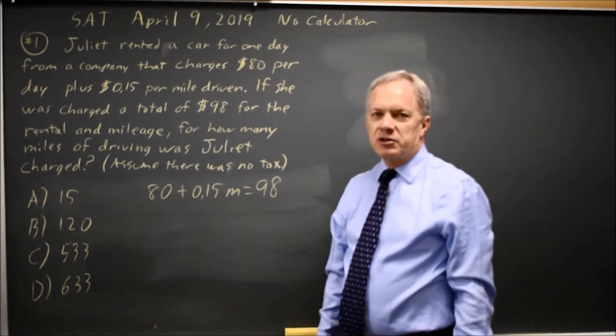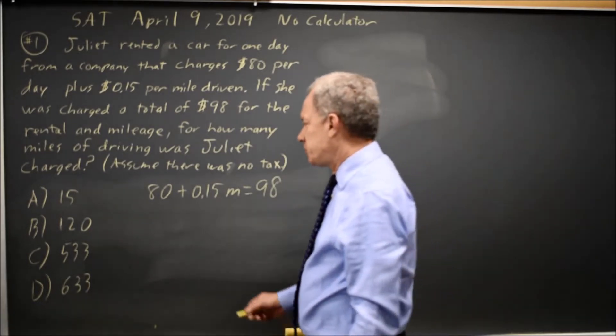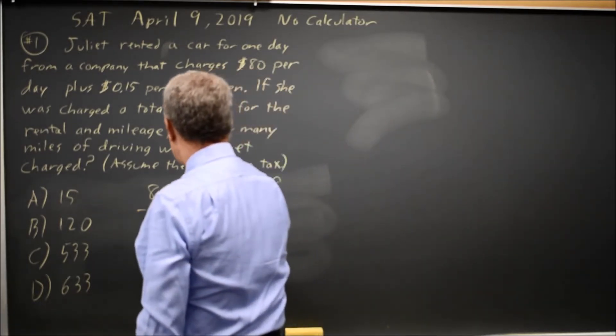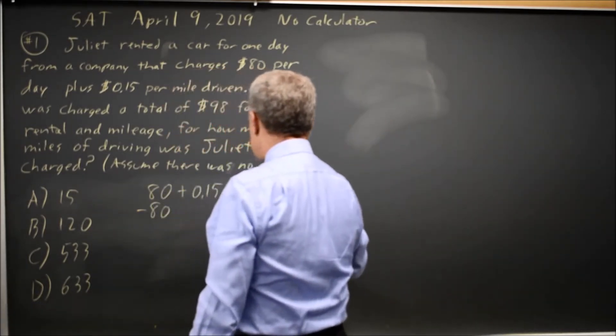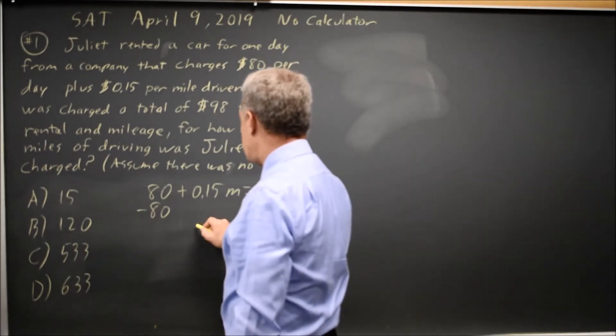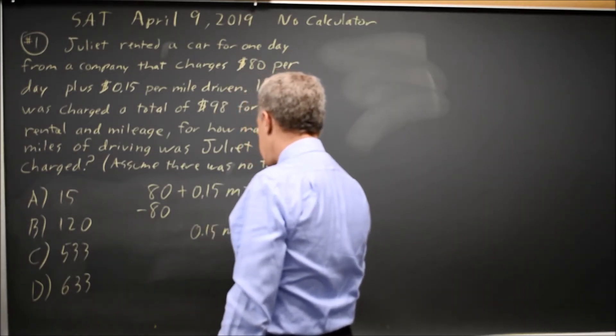College Board often gives you word problems where you have to write and then solve a linear equation, so let's do that. Subtract 80 from both sides to get the m term by itself. 0.15m equals 18.